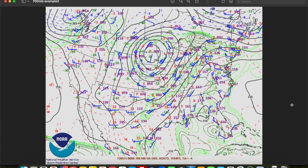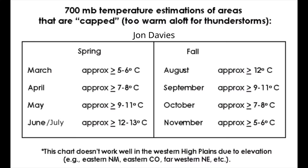We simply want to look at the values of the isotherms over a given region to see how warm they are, and some good thresholds to use to determine whether or not those temperatures are too warm to support convective development are those developed by John Davies. I'll put a link to his article with this chart in it in the description box below, but these are monthly 700 millibar temperature thresholds to determine areas that may be too capped — too warm for thunderstorm development. For example, in May, 700 millibar temperatures warmer than 9 to 11 degrees Celsius may be cause for concern as far as the cap being too strong. The threshold starts out quite low and increases through the spring, reaching a peak in the summer months before falling off again as we head into fall.